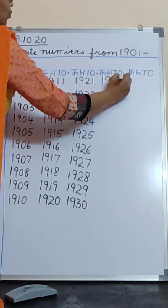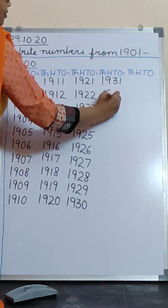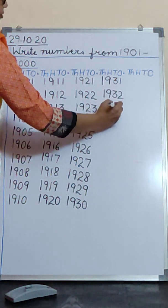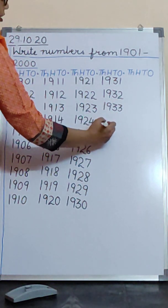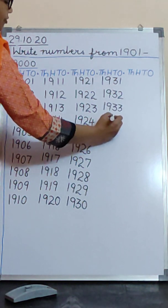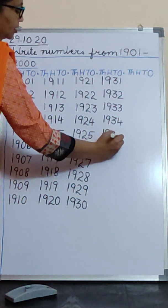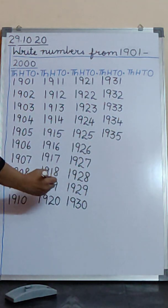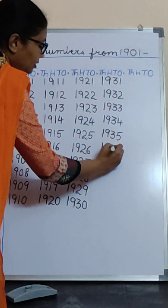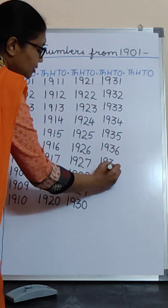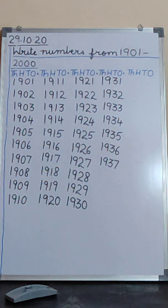1931, 1932, 1933, 1934, 1935, 1936, 1937. Are you all also saying and writing? Say and write along with ma'am. Keep on writing in your copies neatly. Neat work.